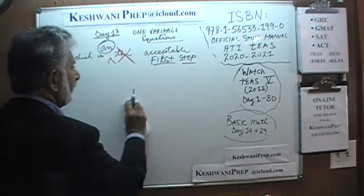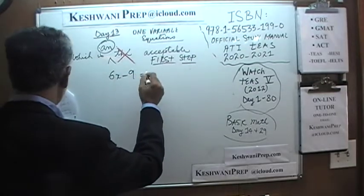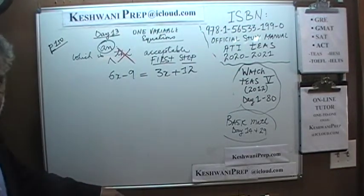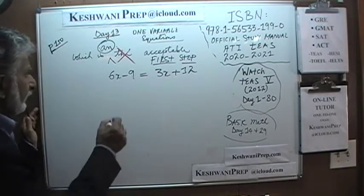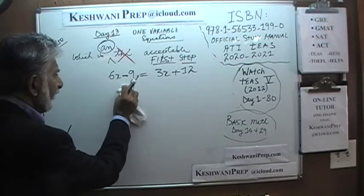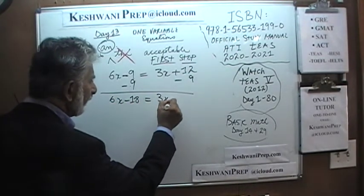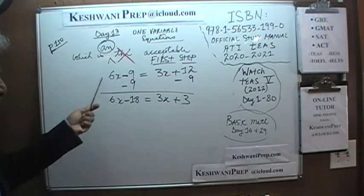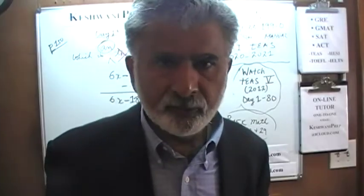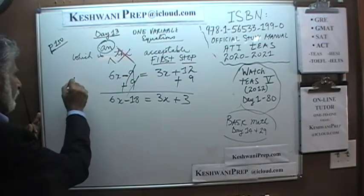The equation is 6x minus 9 equals 3x plus 12. Answer choice A says subtract 9 from both sides — but to eliminate negative 9 you need to add 9, not subtract it. Subtracting 9 doesn't improve the equation at all; we still have unknowns and knowns on both sides. Answer choice A is wrong. Answer choice B says add 12 to both sides — that is also silly and doesn't help us eliminate the negative 9.